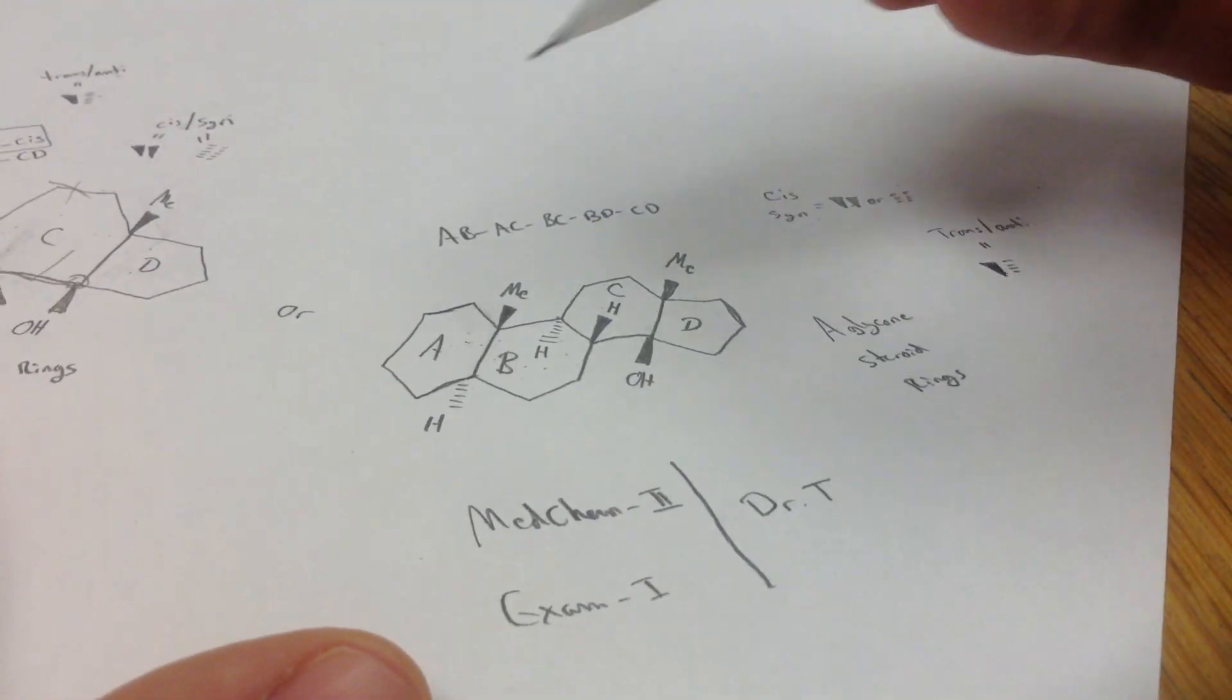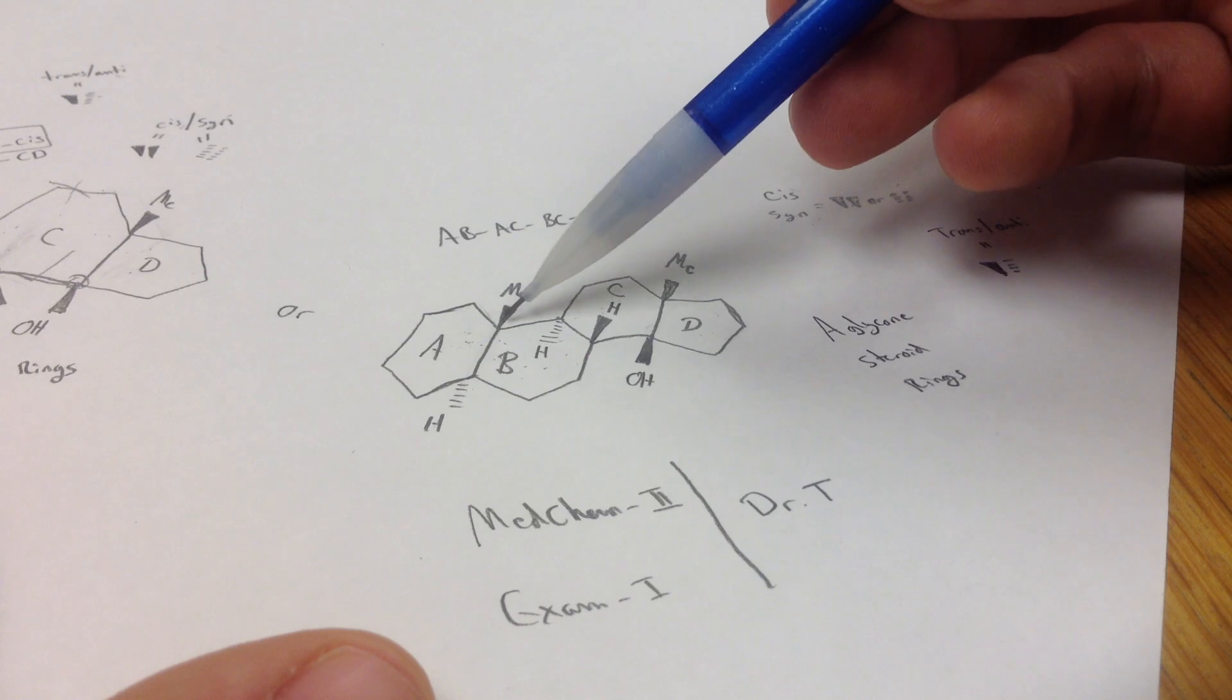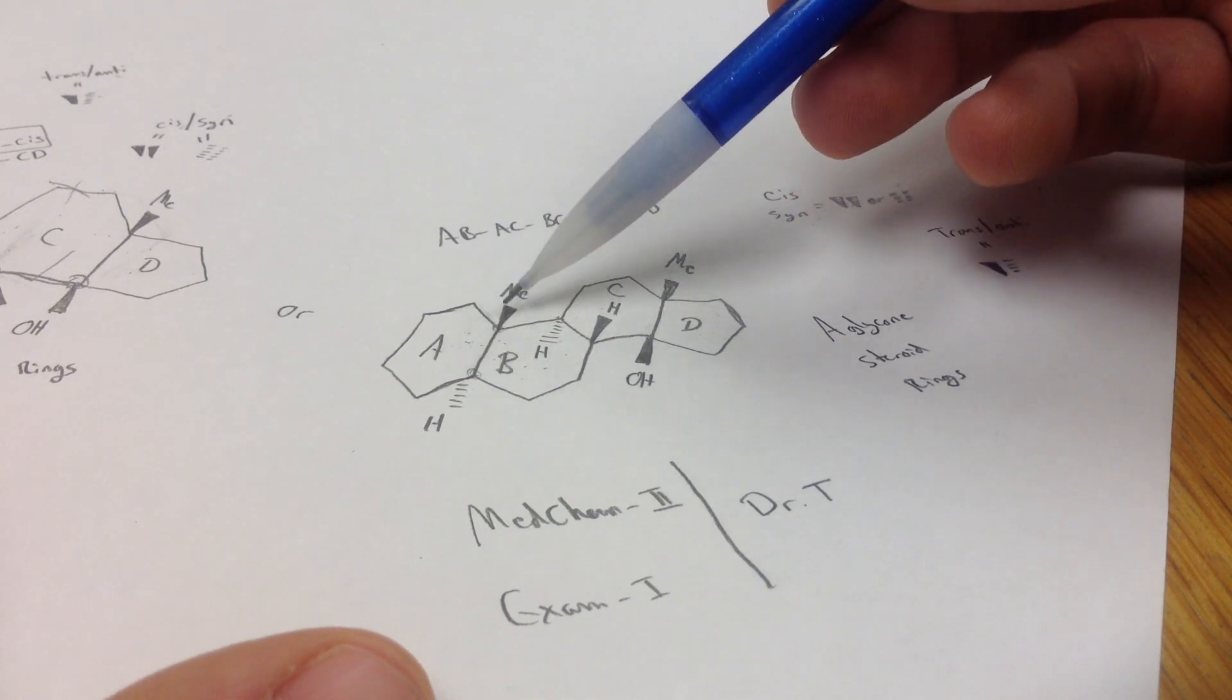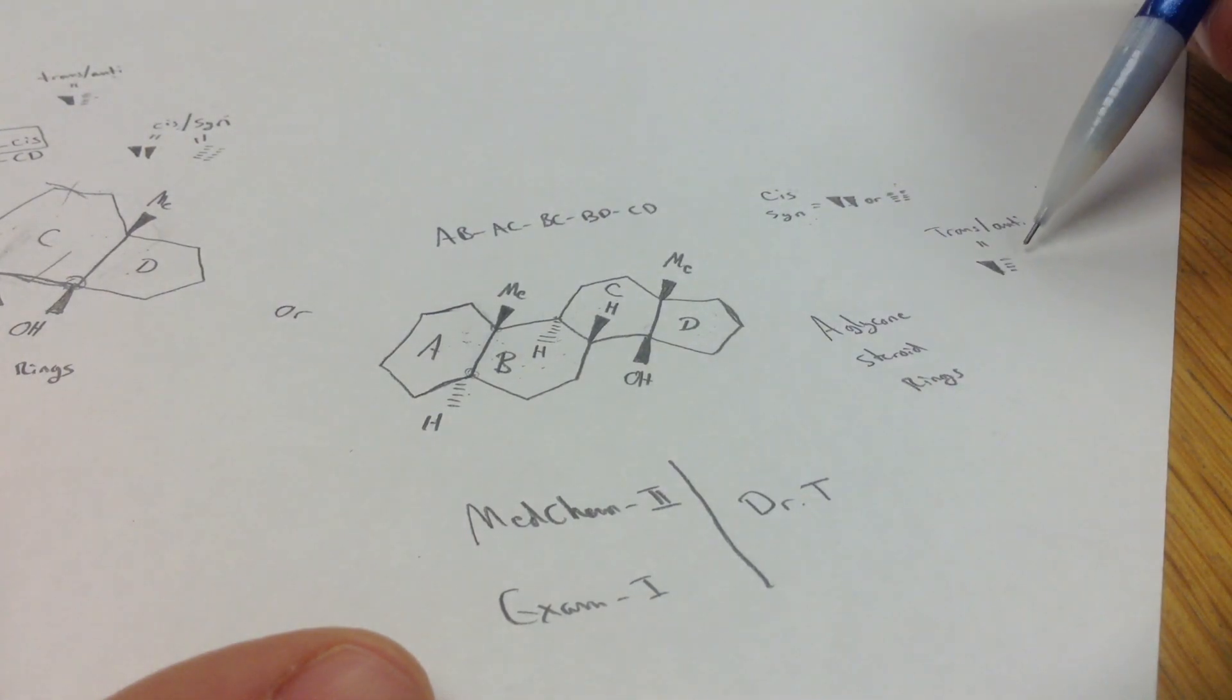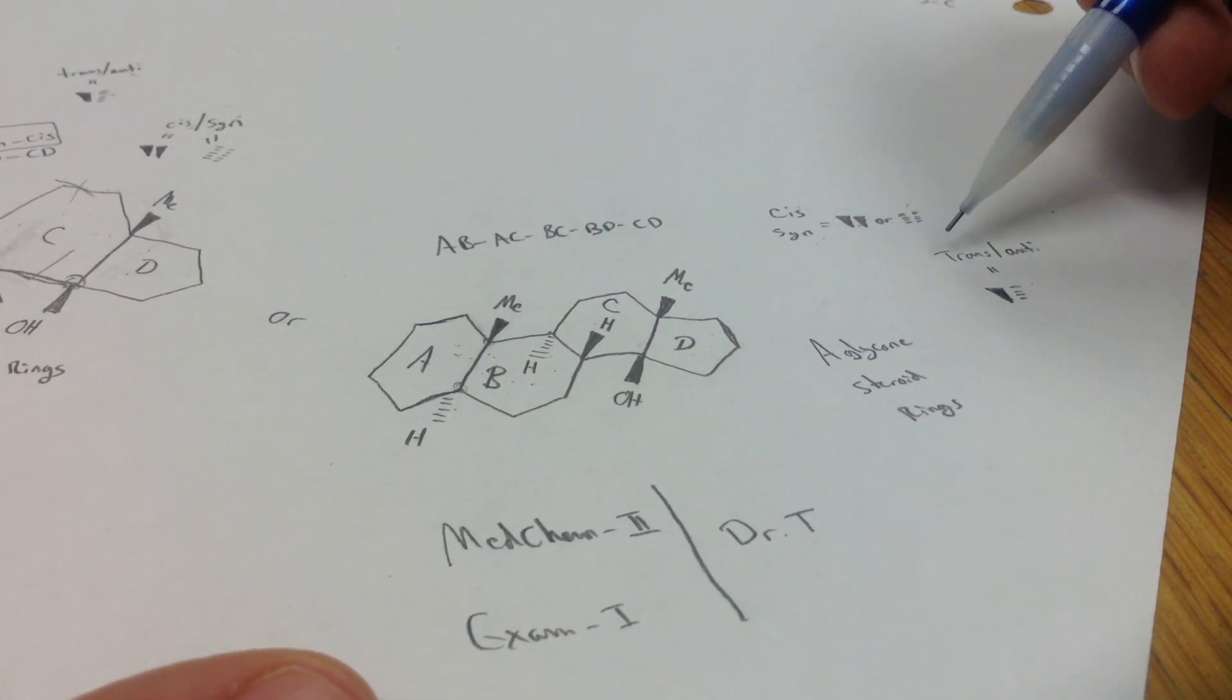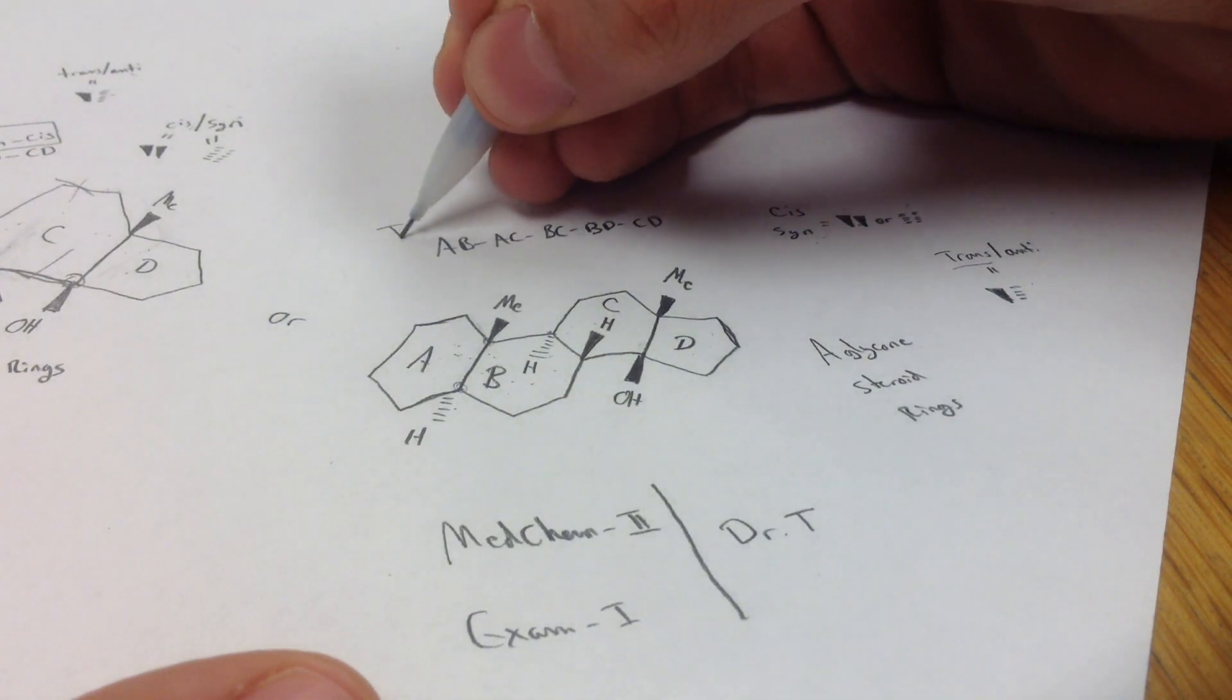So first we're going to look at A and B. So you have this methyl here that's connected right here, and you have a hydrogen, and as you can see, they're opposites. So we look over here, and we want to focus in on trans. So the first one would be trans.